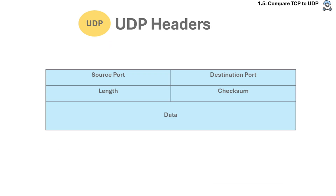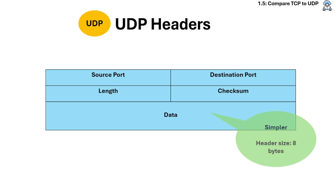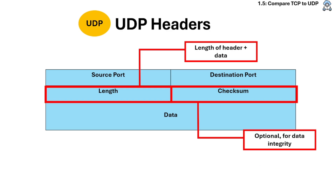UDP is minimal because it's designed for speed, not reliability. Its header includes length, which is the length of the header and data, and checksum, which is optional in IPv4 and ensures data integrity.